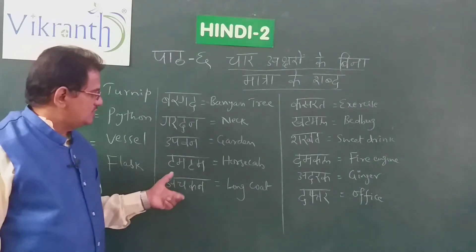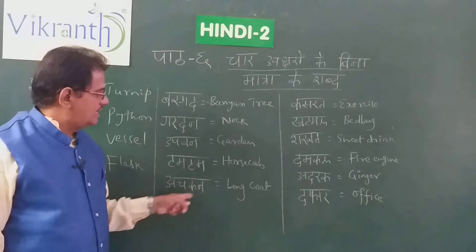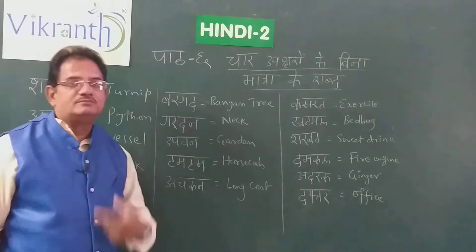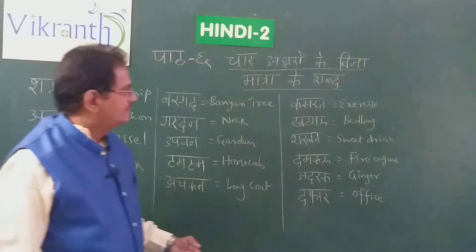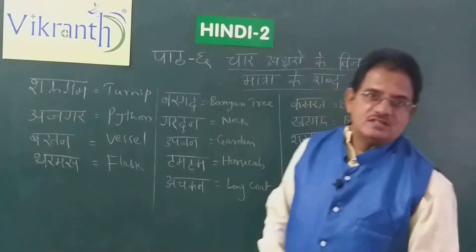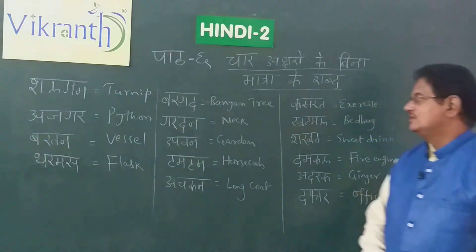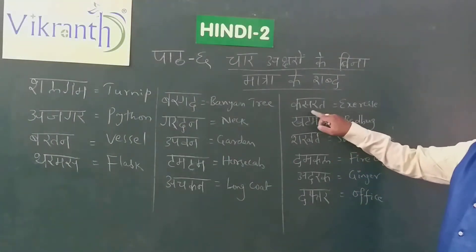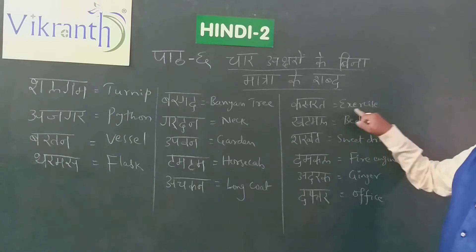Achkan. Achkan means long coat — generally lawyers wear it. Kasrat. Kasrat means exercise. Do you do exercise every day?